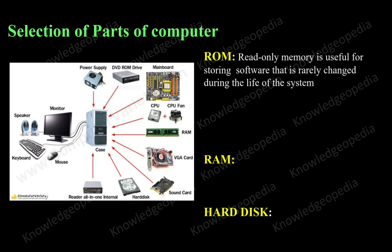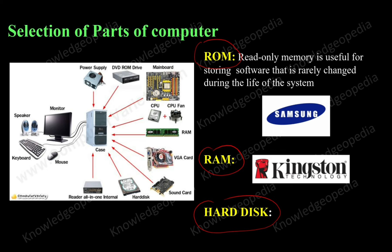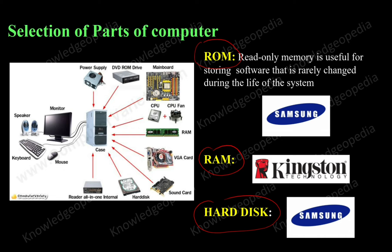Other components are memory. It has three types of memory: one is ROM, RAM, and hard disk. We can take ROM from Samsung, RAM from Kingston, and hard disk again from Samsung.